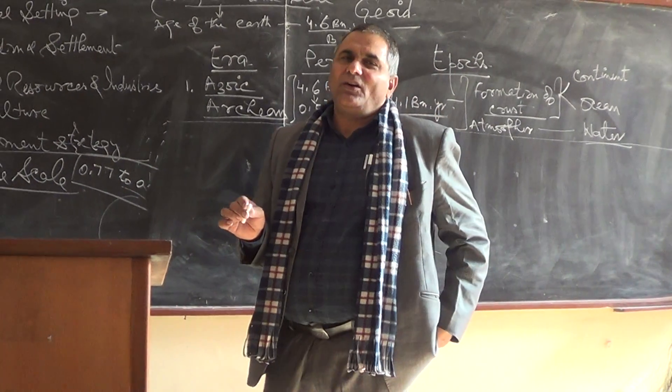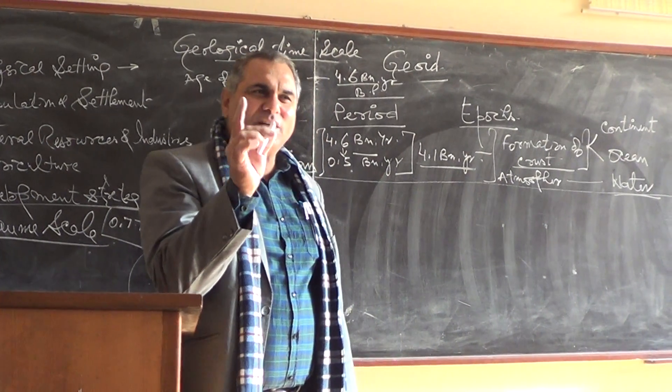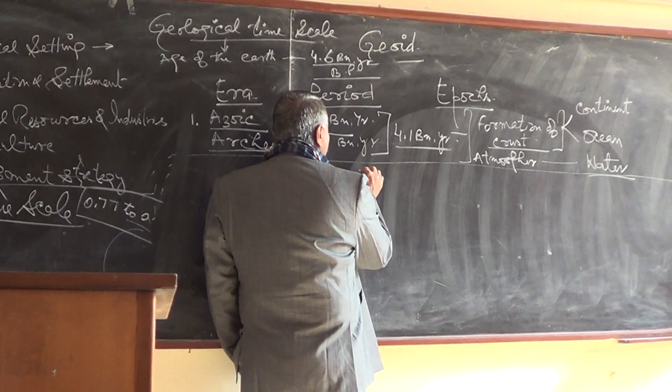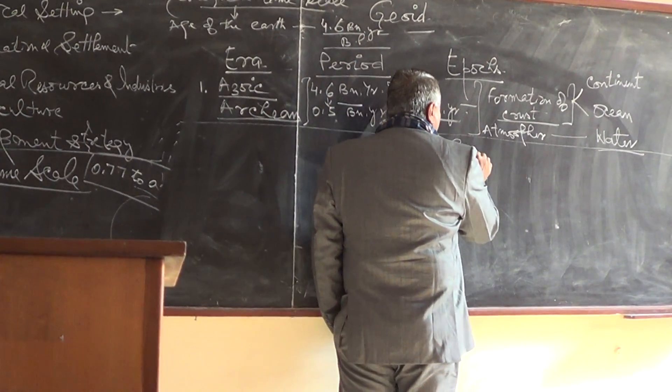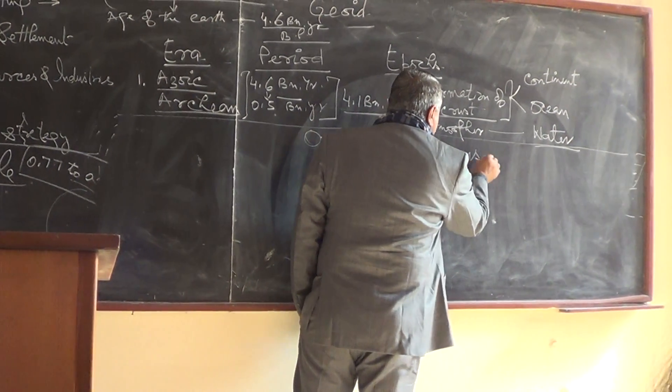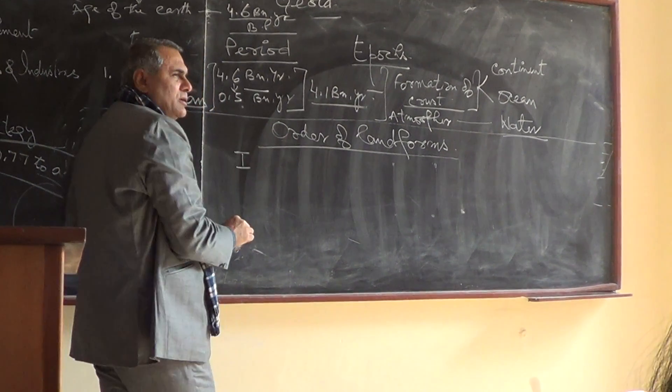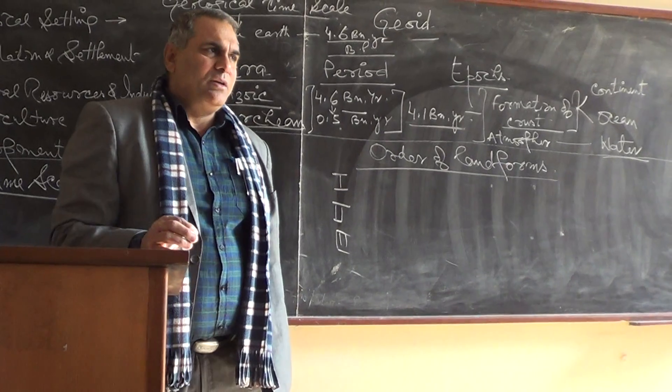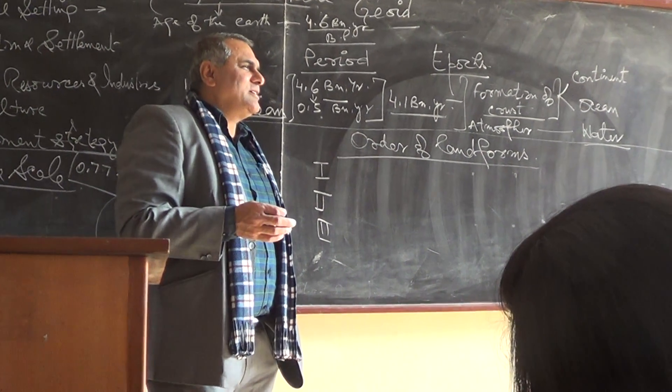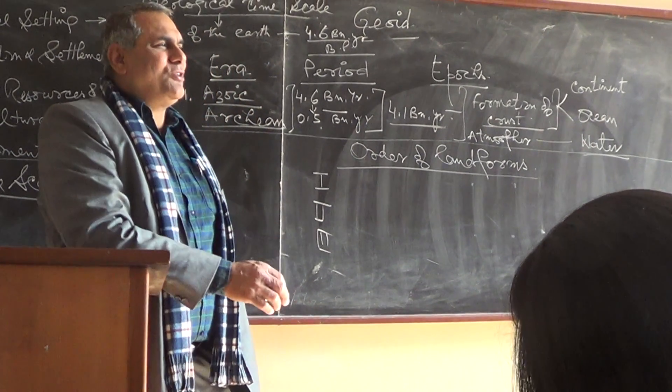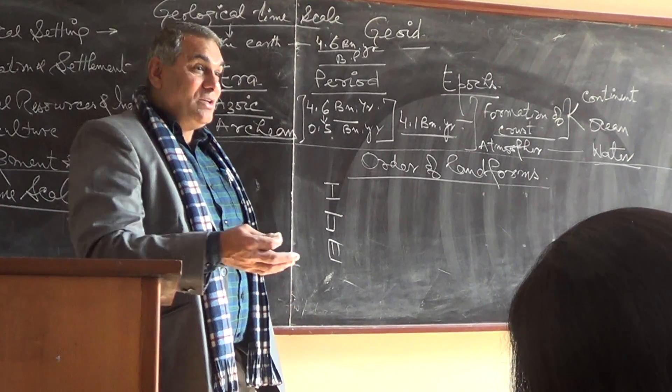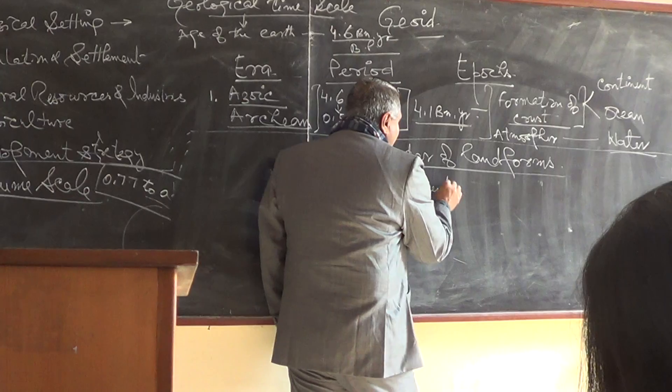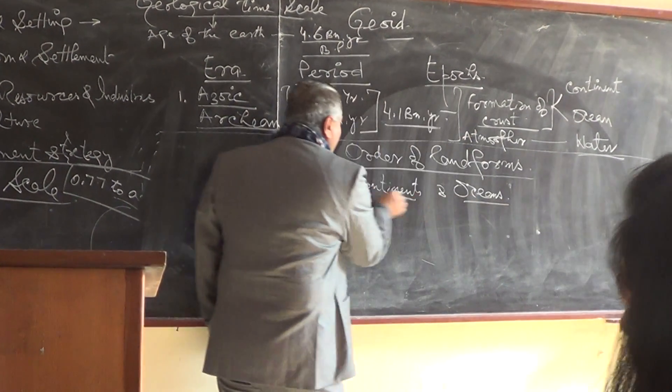Here I will use the word order of landforms. Let me take a quick review to explain what are the ordering of landforms. Since we have studied geomorphology, you should know order of landforms. There are three orders. First order, second order, and third order. First order means only continents and oceans. This is the first order of landforms.